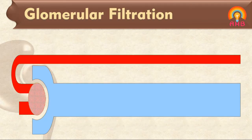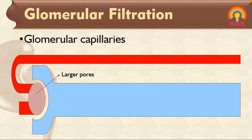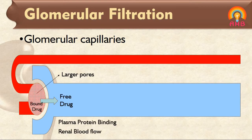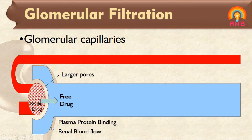First, glomerular filtration. Glomerular capillaries have pores larger than usual capillaries. All unbound, that is free drug, enters the glomerular filtrate, while bound drug remains in the blood. Thus glomerular filtration of a drug depends on its plasma protein binding and renal blood flow. If the drug is highly protein bound, less drug reaches the glomerular filtrate, and less renal blood flow also decreases the rate of elimination.